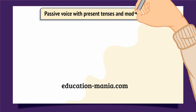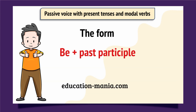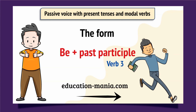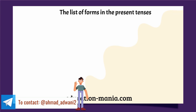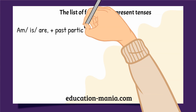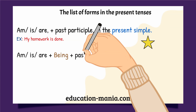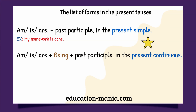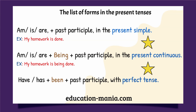Passive Voice with Present Tenses and Modal Verbs. The form is B plus Past Participle, also known as Verb 3. The list of forms in the present tenses: in the Present Simple it is 'am/is/are plus past participle'; in the Present Continuous it is 'am/is/are plus being plus past participle'; and in the Present Perfect it is 'have or has plus been plus past participle'.